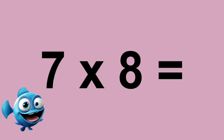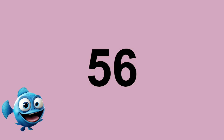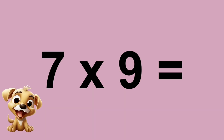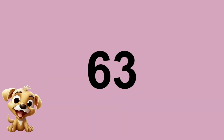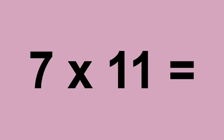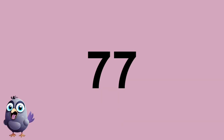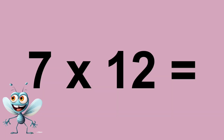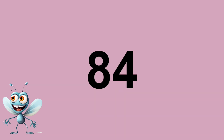Seven times eight equals fifty-six. Seven times nine equals sixty-three. Seven times ten equals seventy. Seven times eleven equals seventy-seven. Seven times twelve equals eighty-four.